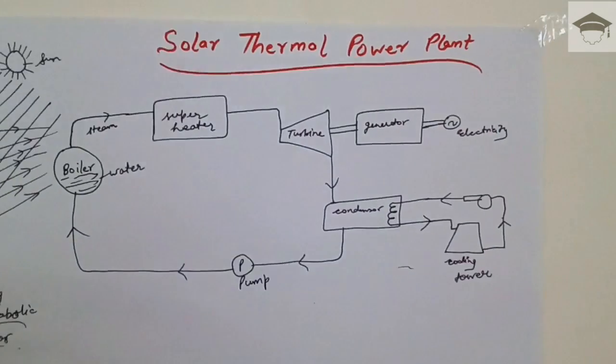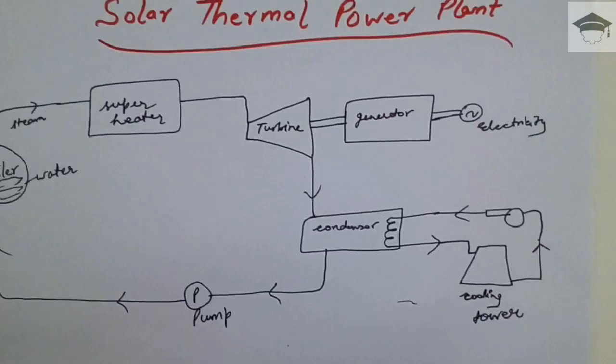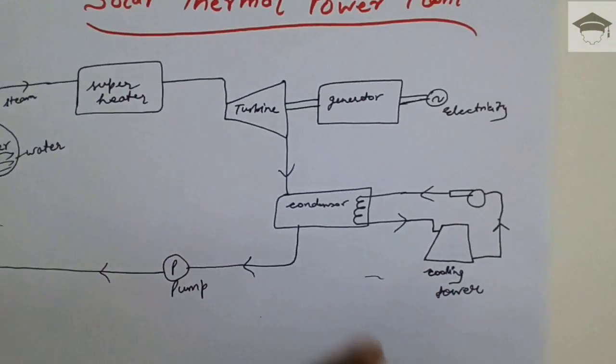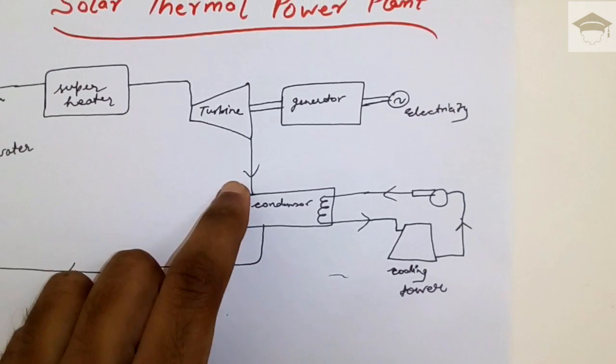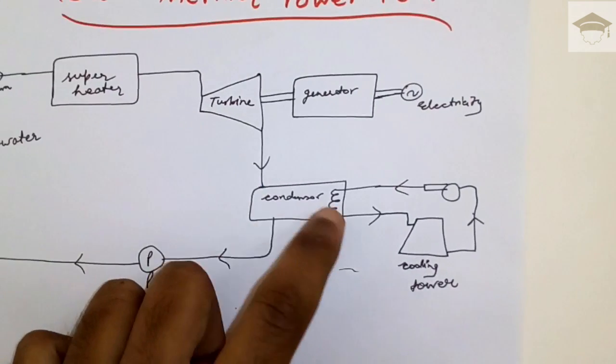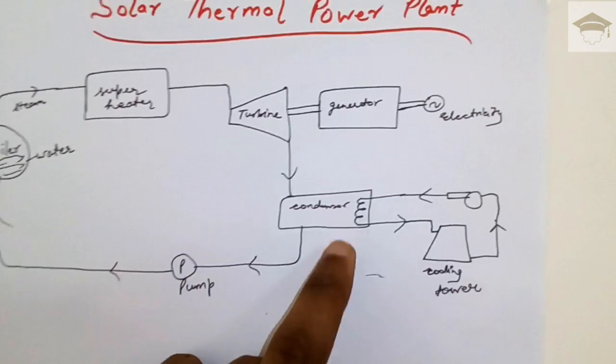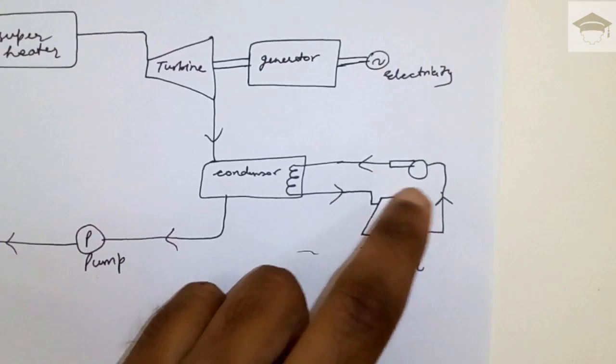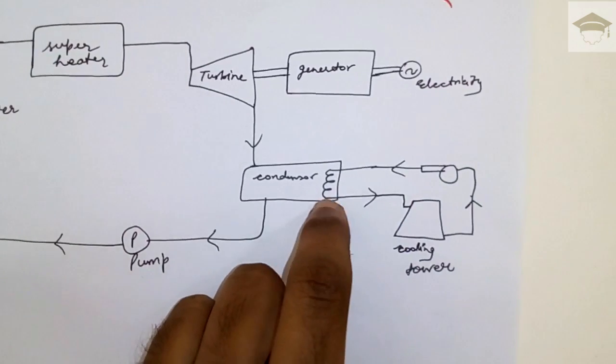After the turbine, the steam passes through the condenser and loses its heat to the condenser. Here circulating cooling water is used which takes the heat from the saturated steam.